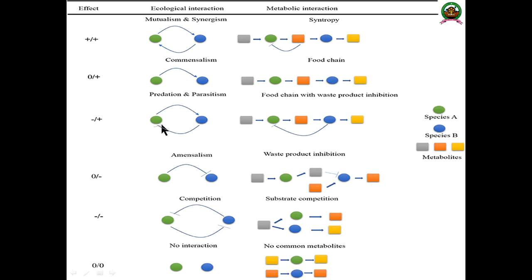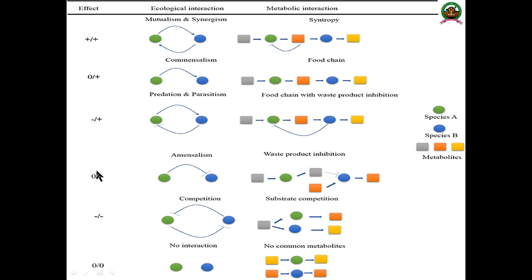Commensalism can be illustrated with the food chain and waste product inhibition as examples. In predation and parasitism, one organism inhibits another in a negative way while gaining a positive benefit itself — a minus-plus effect. The metabolites produced by one organism are utilized by another, which adversely affects the first organism.